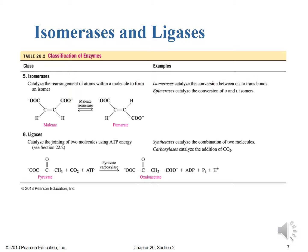So we see here in our specific example we take maleate in the presence of maleate isomerase to form fumarate. Which is again an example of an isomerase catalyzing that conversion between cis and trans bonding.